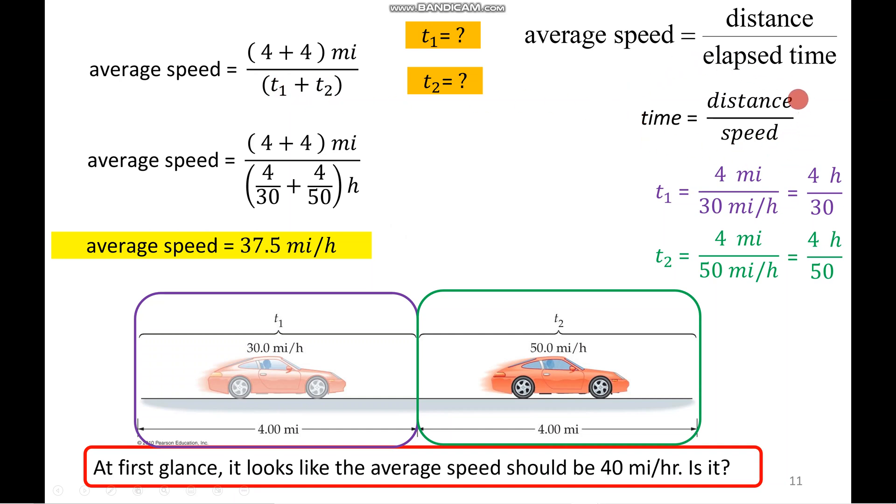We know T equals distance over speed. So, let's try and figure out what these variables are. T1 would be the 4 over 30 right here, 4 over 30. And then T2, same thing, just with the 50, 4 over 50. We plug this in, you do the math out, and you're going to get your average speed is actually 37.5 miles an hour. So, close to 40, but definitely not 40.